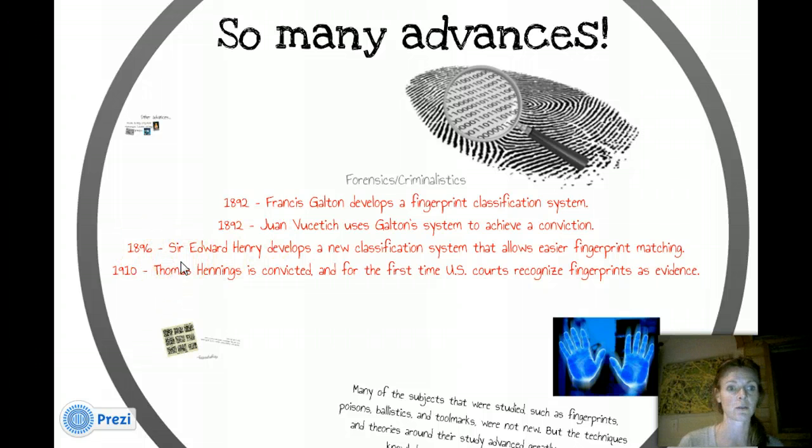So, he uses that classification system to actually convict somebody of a crime, which was a big deal. That had never been, fingerprints hadn't been really used in order to convict someone quite yet. In 1896, Sir Edward Henry developed a new classification system that allows easier fingerprint matching. I don't know what quite that entailed, but, hey, anything to make something a little bit more efficient, yay, woohoo. In 1910, Thomas Henney convicted, and for the first time, the U.S. courts recognized fingerprints as evidence. That's not until the early 1900s, and now that's used all the time. So that's kind of a huge advance.